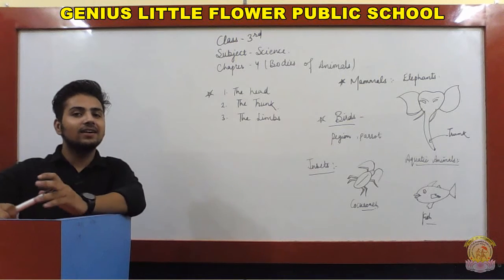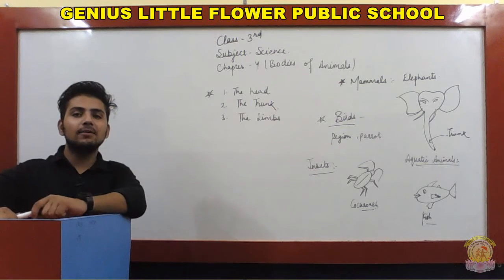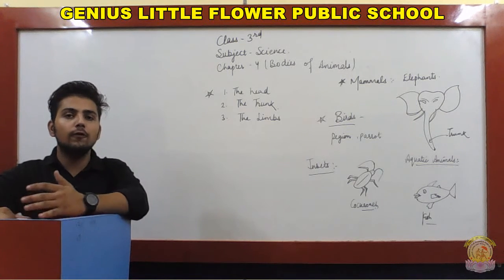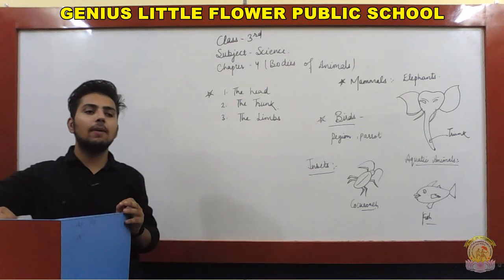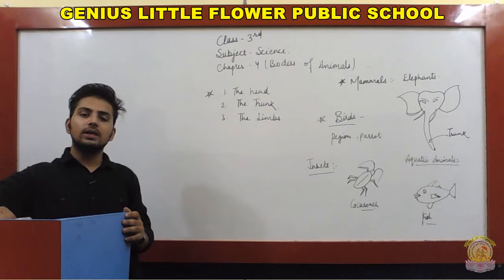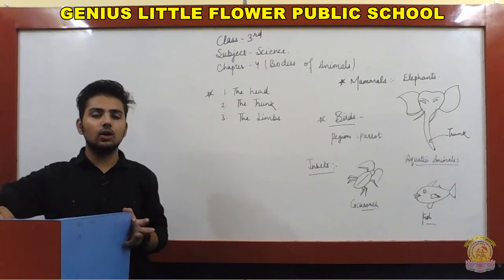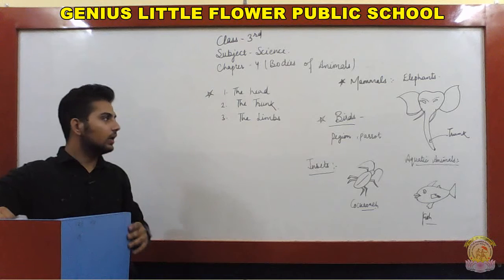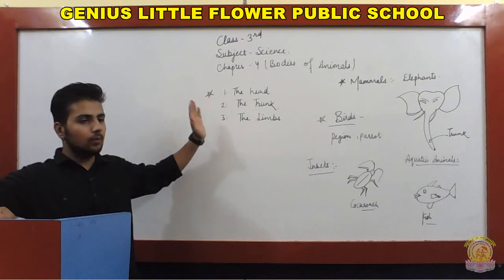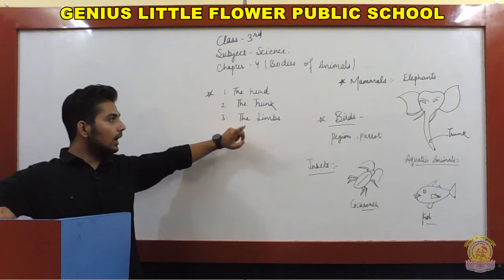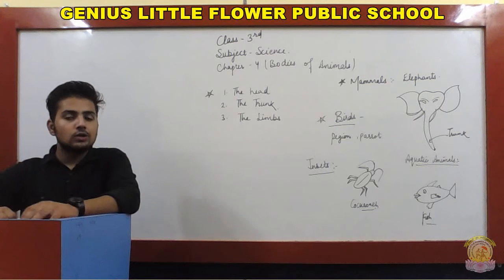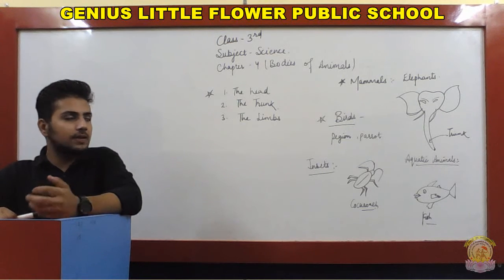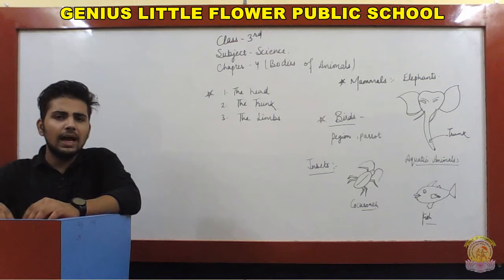Hello class, welcome back. We were doing chapter number 4 which is Body of Animals. Today we are going to do the species of animal kingdom classification — body, head, trunk and limbs. We are going to talk about which kinds of animals are divided into categories.